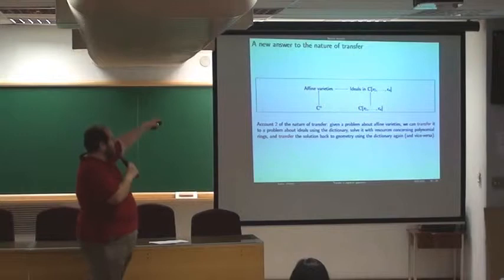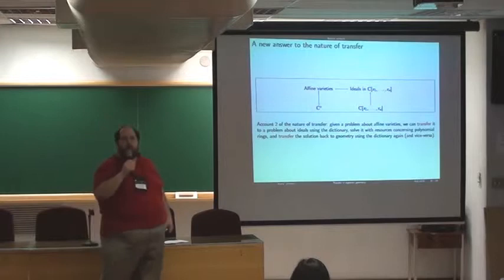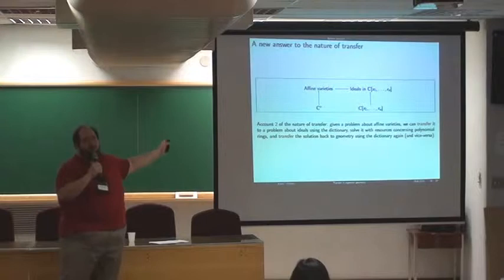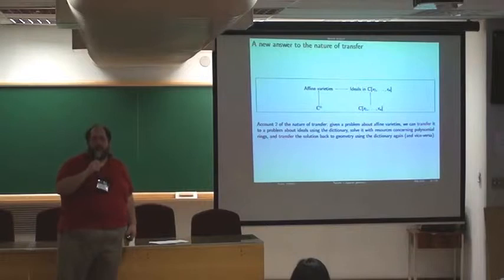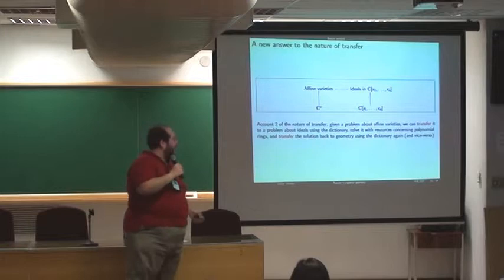And so, you might think here that the transfer is more complex. Do we transfer from varieties to ideals? Well, that's the Nullstellensatz. Is there a way to transfer from varieties to ideals and then use facts about the polynomial ring and push back? Well, that's the kind of more enriched picture I want to focus on next. So, here's a second account of the nature of transfer. You start with a problem, for instance, about affine varieties. You then transfer it via the dictionary to a problem about ideals. You can then solve it with resources not just involving ideals, but also involving polynomial rings. And then, you can transfer back using the dictionary to get a solution to your problem about varieties. And, of course, you can mirror this and do it the other direction.